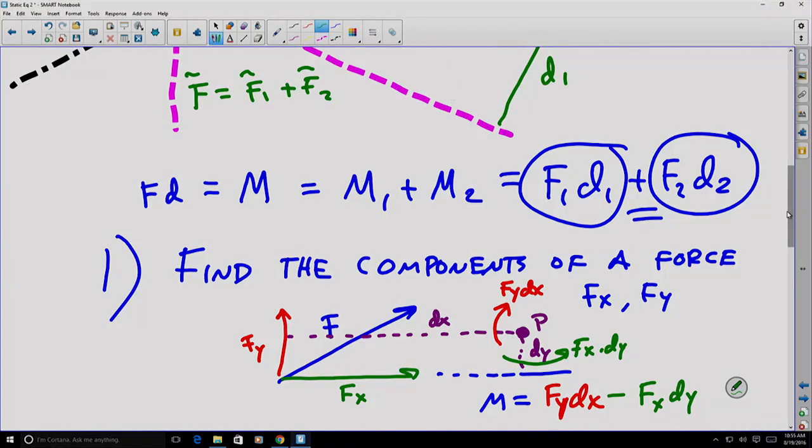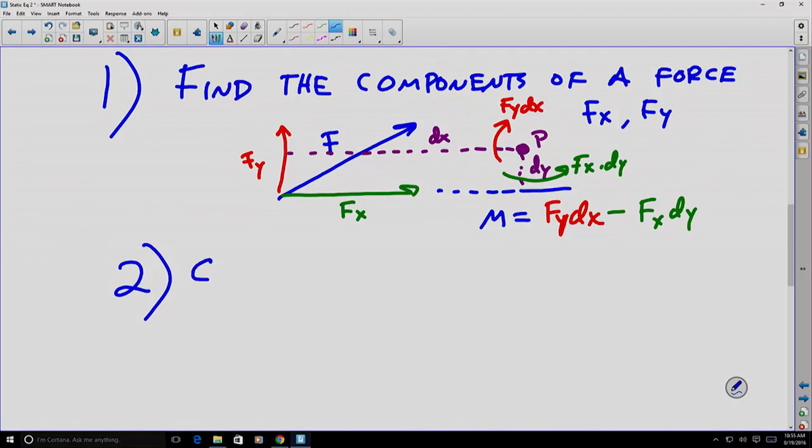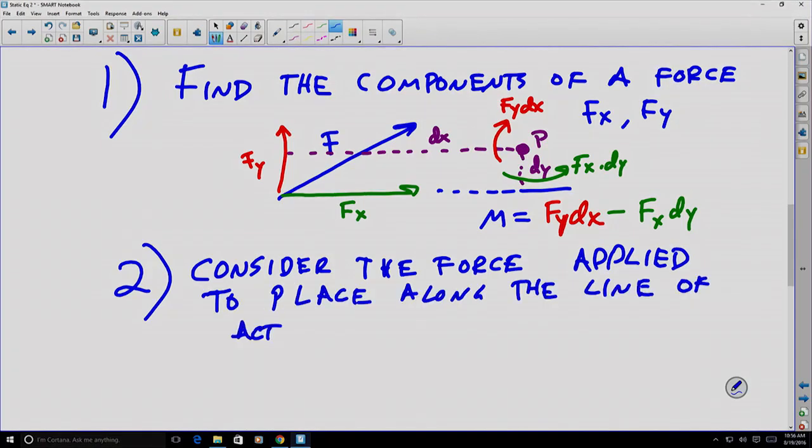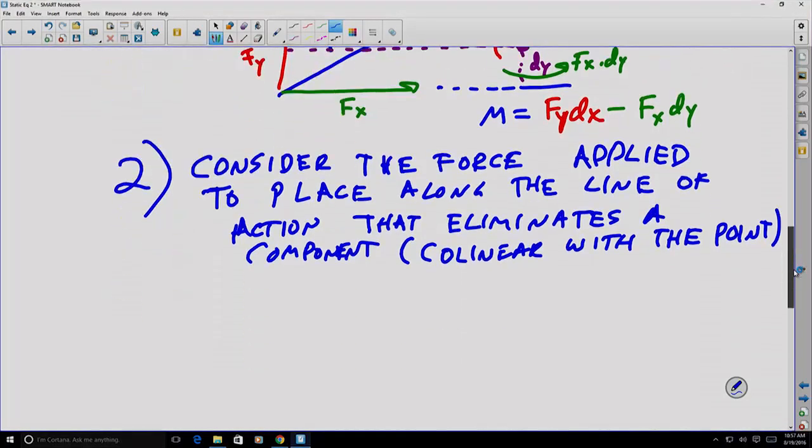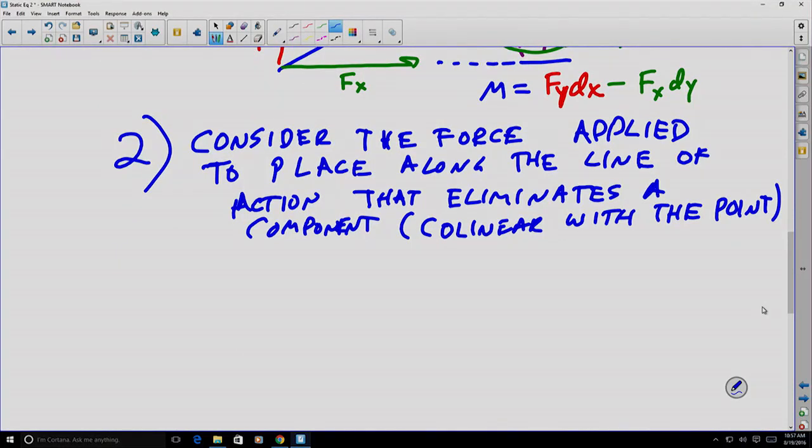The second useful result, if we consider the force applied to a place anywhere along the line of action, and we select a particular place that eliminates a component by making it collinear with the point, then we can find the moment very simply. That was quite a lot of words to explain it. Let's see if we can show it graphically.